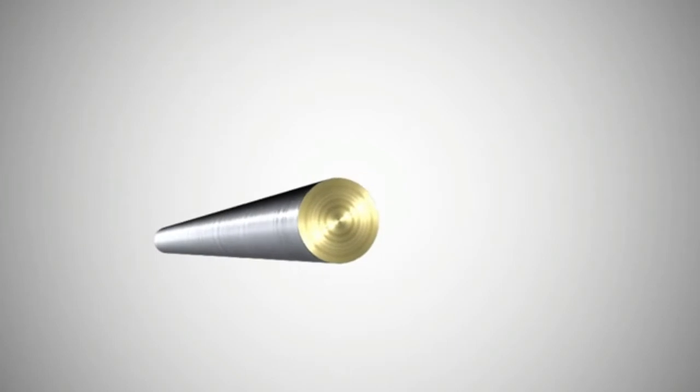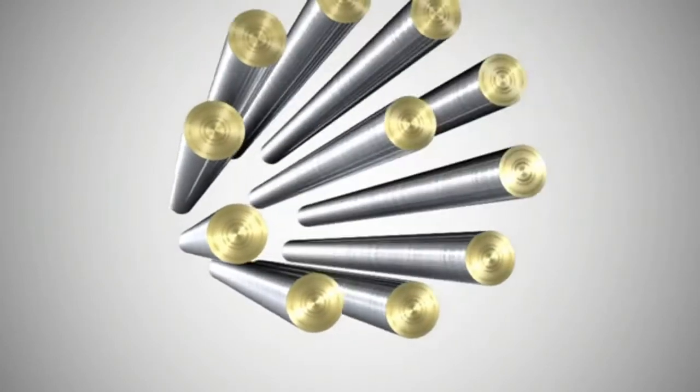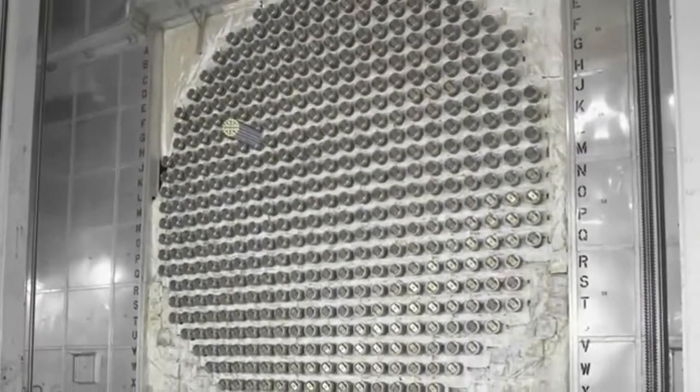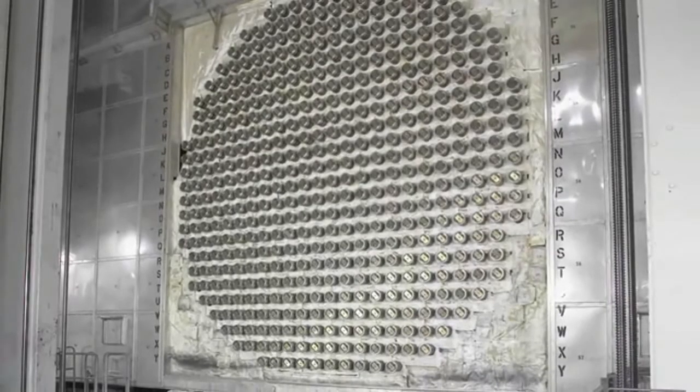The pellets are sealed into metal tubes which are welded together to form a fuel bundle. The fuel bundles are then inserted into a large tank called a calandria, which is the heart of the nuclear reactor.